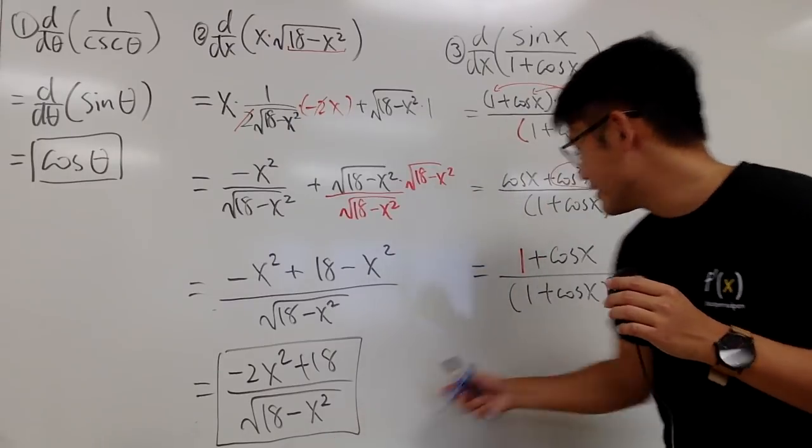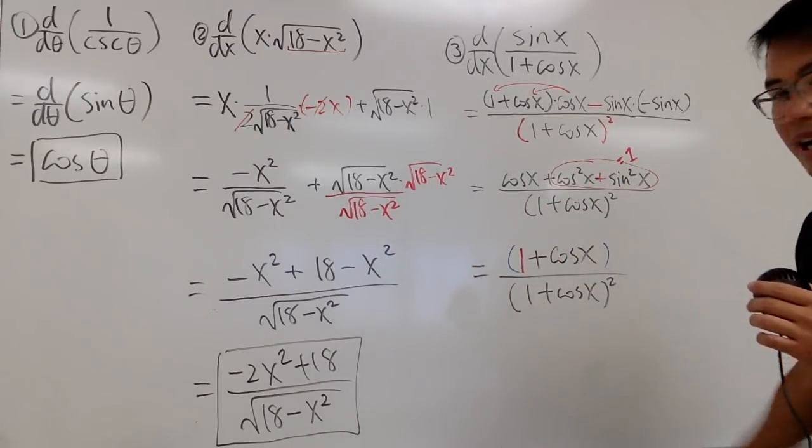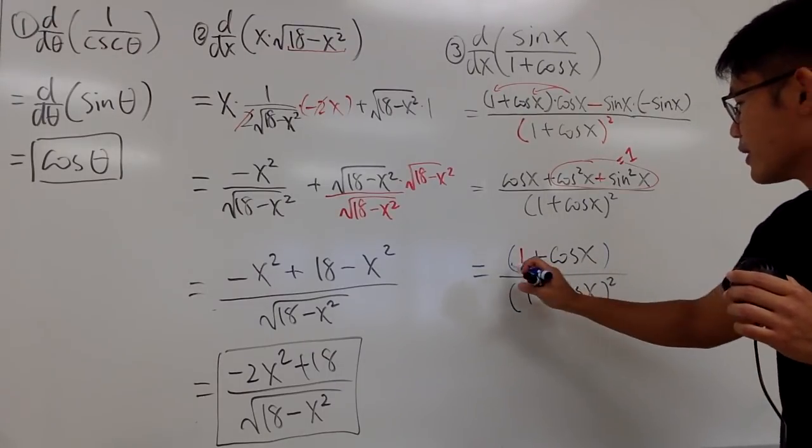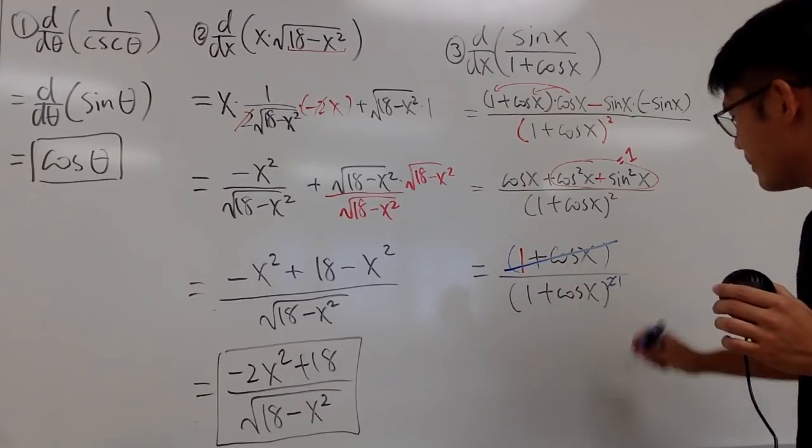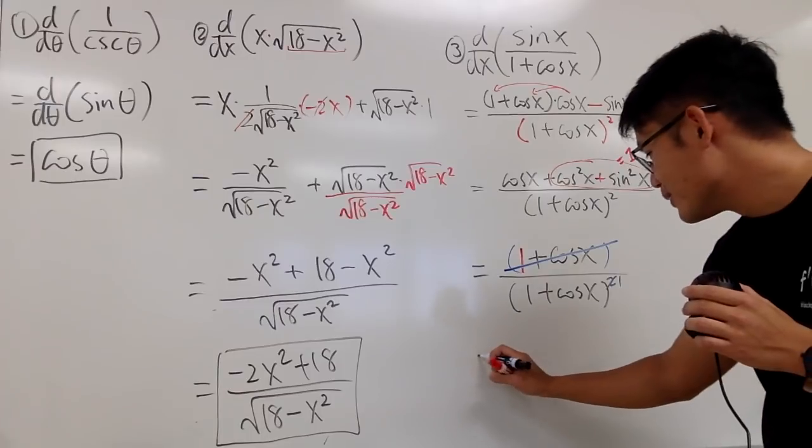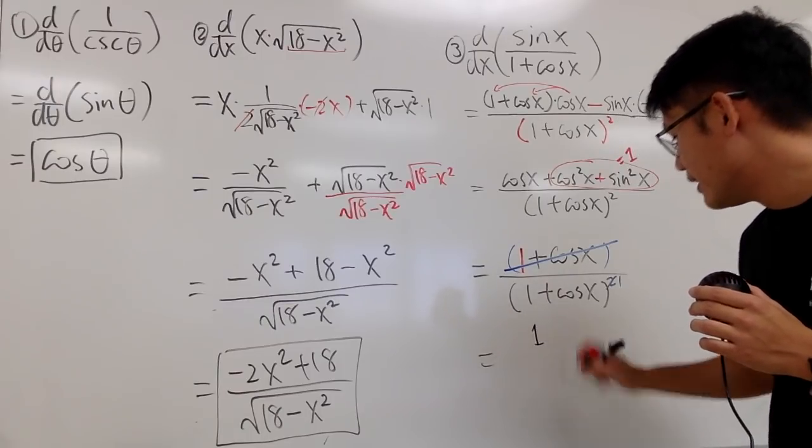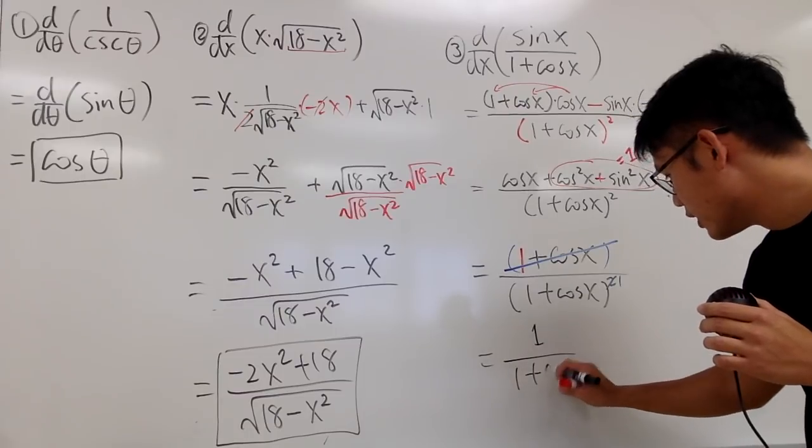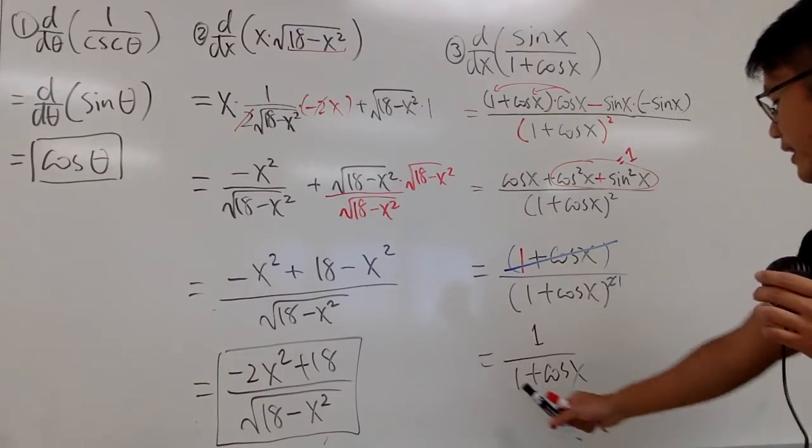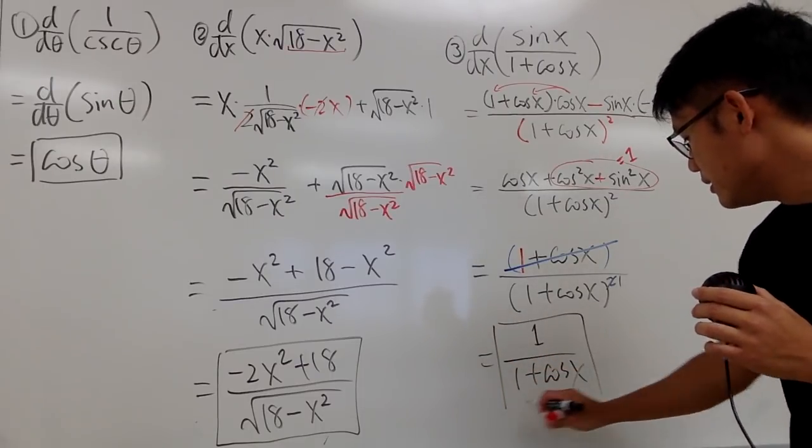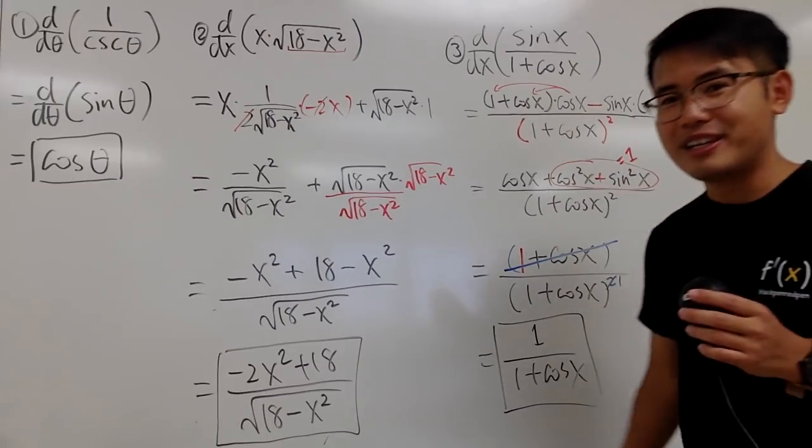I see that this is just the same thing as the denominator. But, this is to the first power, and this is to the second power. So, I can cancel out one of them together, and it becomes that. So, the answer to this is just 1 over 1 plus cosine x. And, then, this is now just to the first power, and that's what we have. And, this is it for this right here.